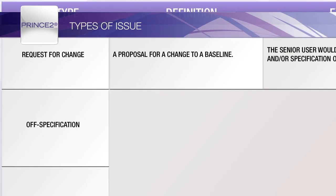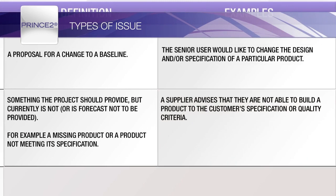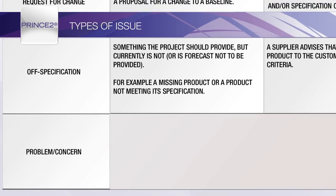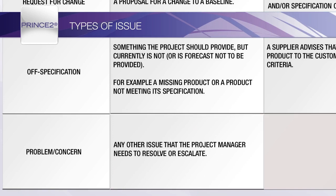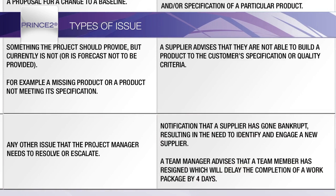An Off Specification is a product that has failed to meet some criteria during quality activity. It could also be a product that should have been delivered but has not been. Off Specifications are typically raised by the Supplier or Team Manager, a Reviewer or Chair of the Quality Review Team, or by Project Assurance. All other issues are categorised as general problems or concerns. If an issue is categorised as a concern and is considered formal, then it will be transferred to the Risk Register and analysed using the Risk Management Procedure. All other issues will be handled using the Issue and Change Control Procedure.